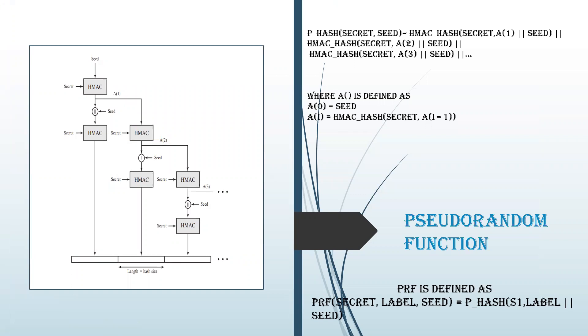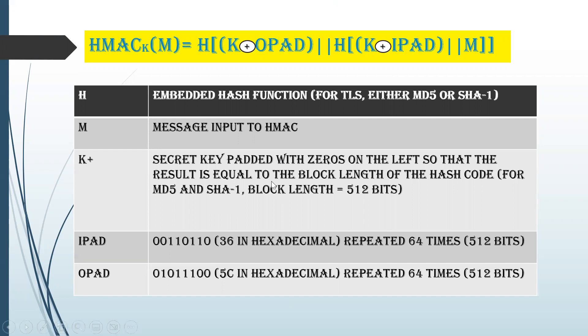SSL uses the same algorithm but does not use padded bytes — instead it concatenates with the secret key. In TLS, the secret key is padded using XOR with that value. The level of security should be the same in both SSL and TLS. For TLS, the MAC calculation includes: MAC write secret, sequence number, compressed value, compressed version, compressed length, and compressed fragment — the same fields of length, type, and version that you've seen in SSL — all processed through the hash algorithm.